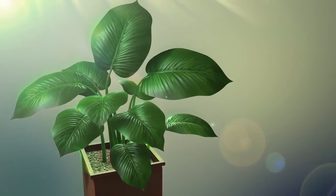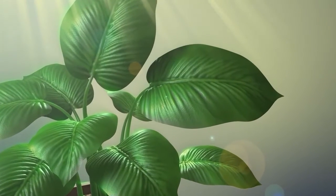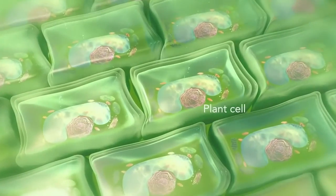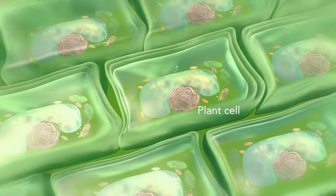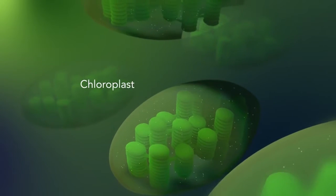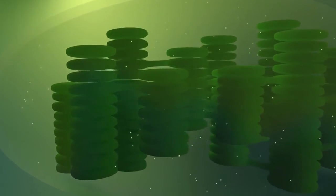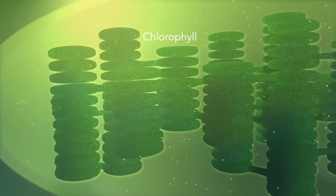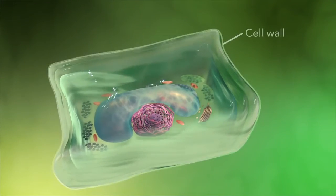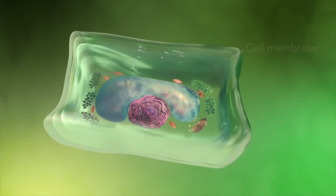Some organisms, such as plants that are photo-autotrophic — meaning they capture sunlight for energy — have cells with an organelle called a chloroplast. The chloroplast is where photosynthesis happens. It's green because it has a green pigment called chlorophyll. Plant cells also have a cell wall outside of their cell membranes that shapes, supports, and protects the plant cell.